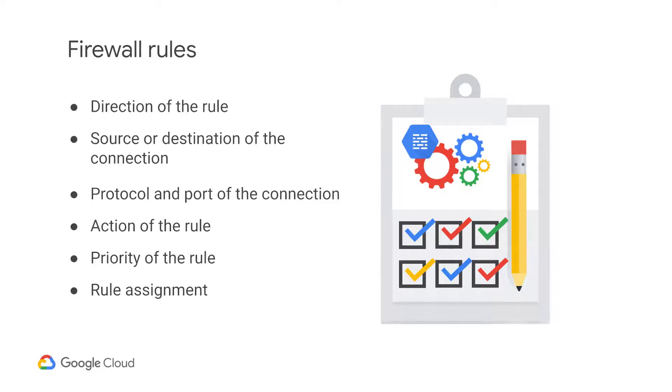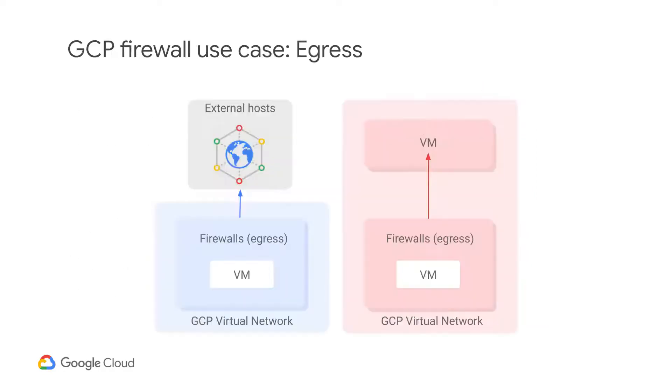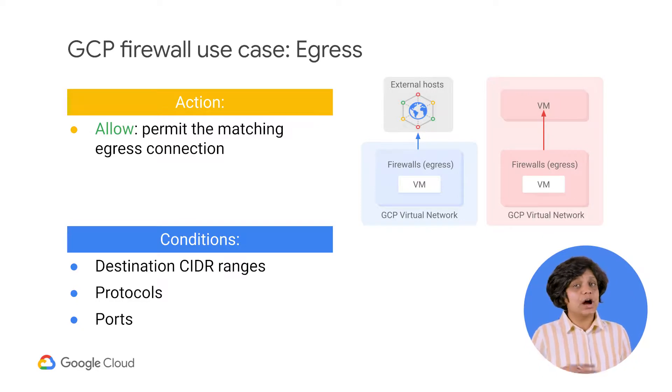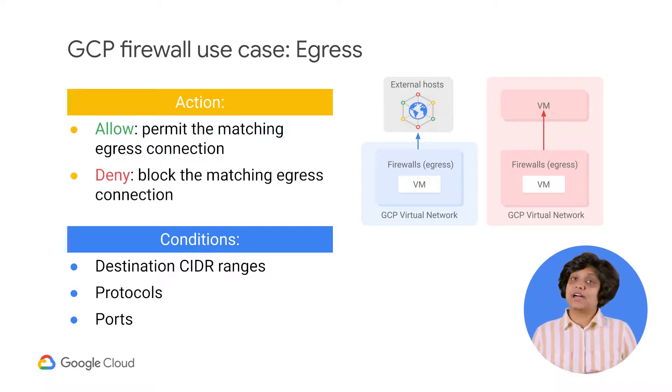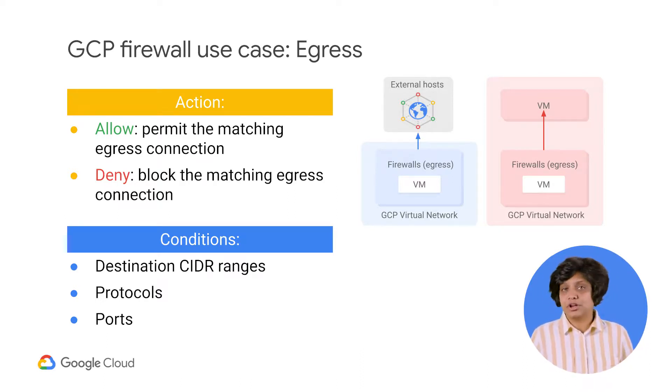Let's look at some GCP firewall use cases for both egress and ingress. Egress firewall rules control outgoing connections that originated inside your GCP network. Egress allow rules allow outbound connections that match specific protocol, ports, and IP addresses. Egress deny rules prevent instances from initiating connections that match non-permitted port, protocol, and IP range combinations. For egress firewall rules, destinations to which a rule applies may be specified using IP CIDR ranges. Specifically, you can use destination range to protect from undesired connections initiated by a VM instance towards an external destination, for example, an external host.